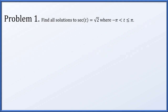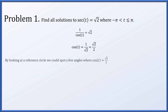We'll begin by finding all solutions to the equation secant of t equals root 2, where t is restricted to be between minus pi and pi. It might equal pi, but it will not equal minus pi. Since secant of t is simply 1 over cosine, we can reciprocate to get cosine of t equals 1 over root 2, also written as root 2 over 2.